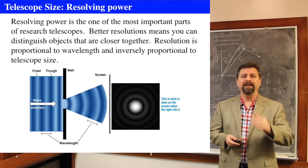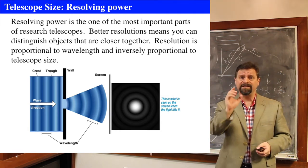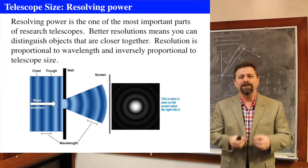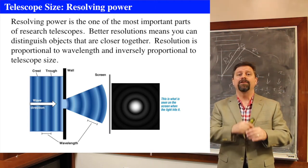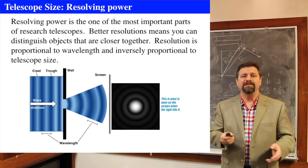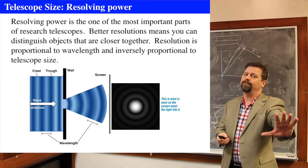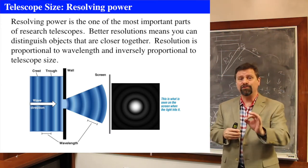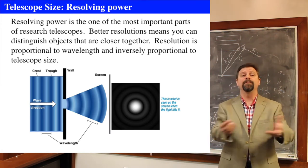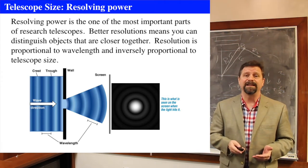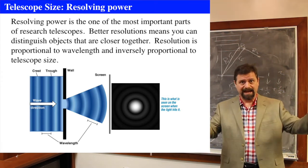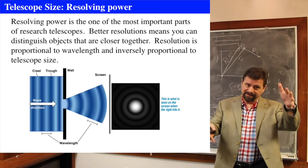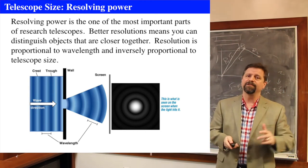Resolving power is limited because of diffraction — the way light diffracts through a boundary. Once you send light through an opening, it starts to diffract and becomes less smooth. Light can travel for light years from a distant object completely undiffracted, but as soon as it goes through the aperture of a telescope, it starts to diffract around the boundaries. Even without a tube, when light hits a mirror, the physical size of the mirror itself starts the diffraction process.